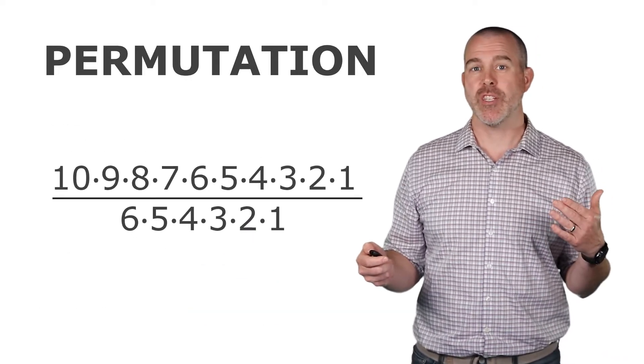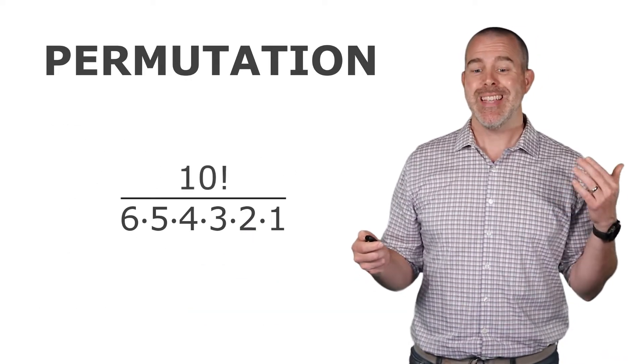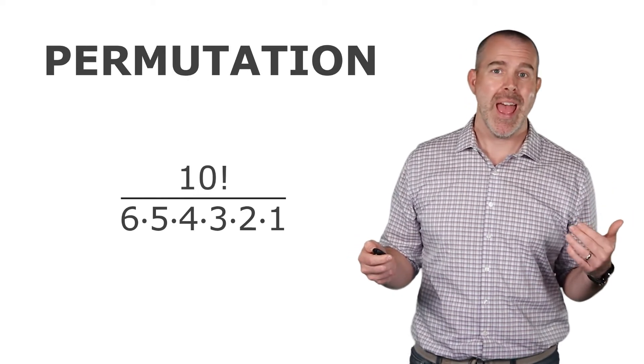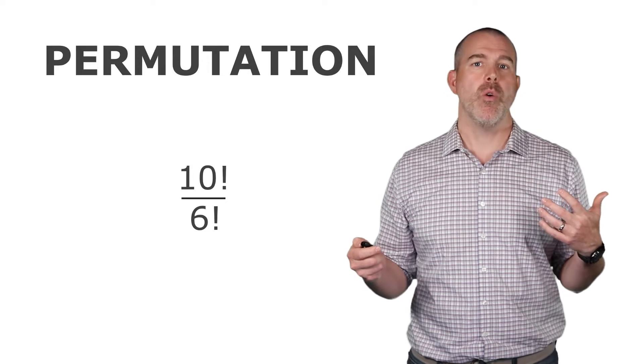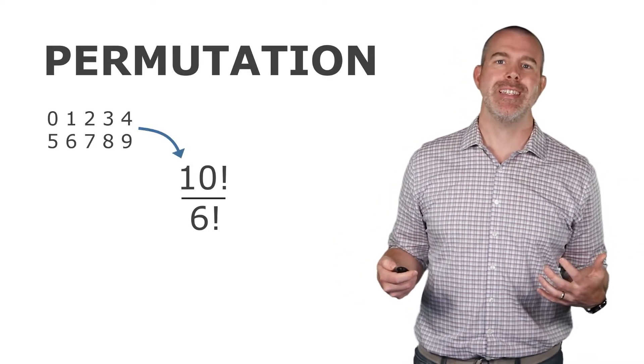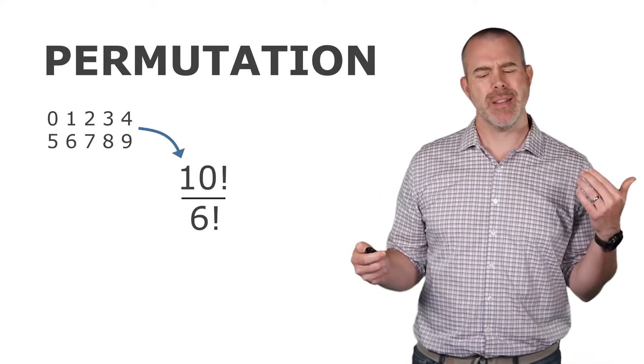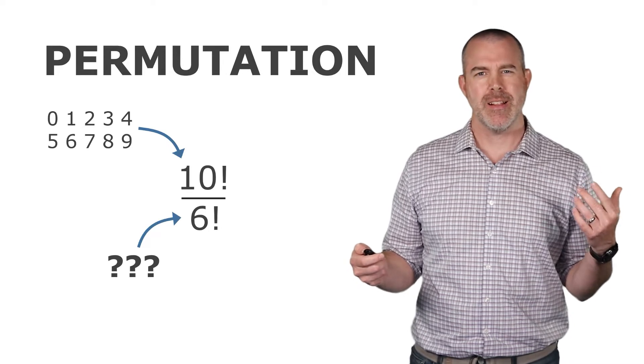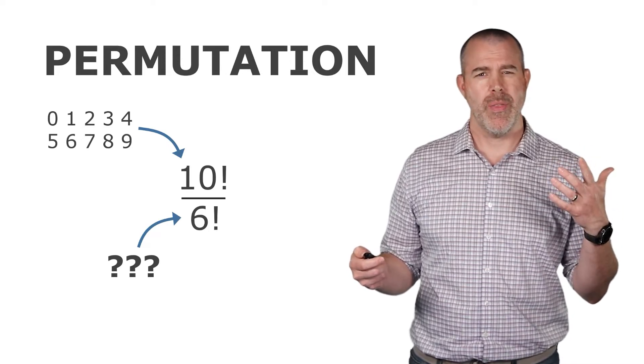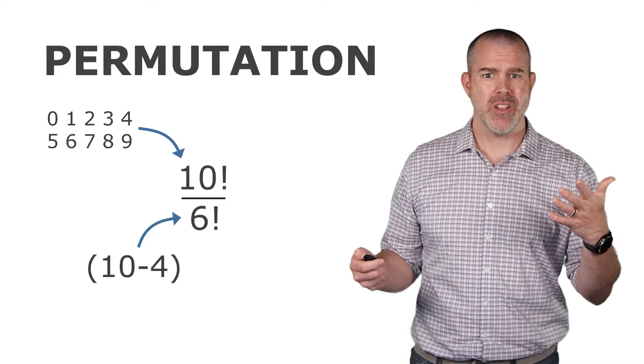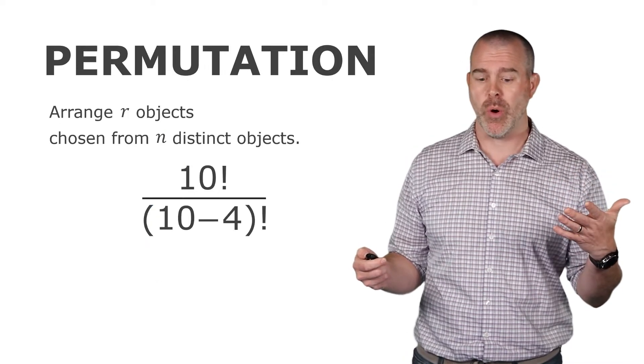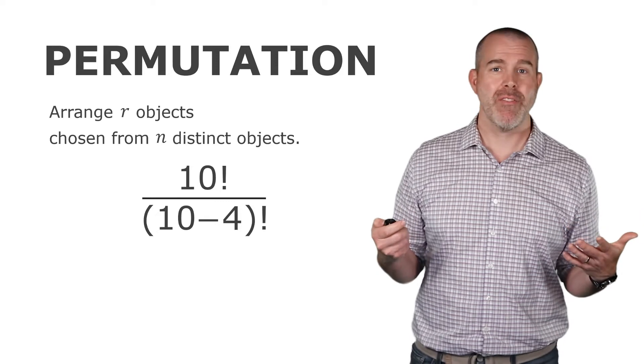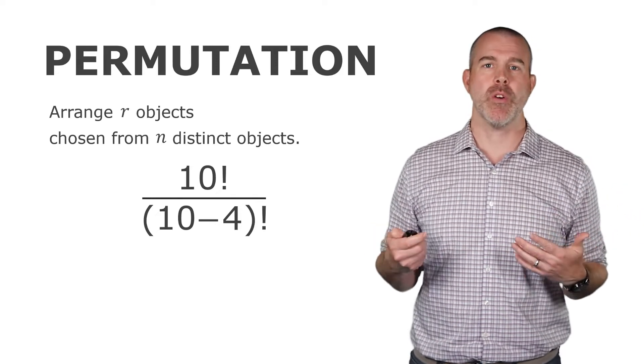Well, if we look at this expression, this is really 10 factorial in the numerator and then 6 factorial in the denominator. Now, we know the 10 comes from the 10 digits. But the question is, what about the 6? Well, that's the leftover, right? So if you look at that 6, it's really 10 minus 4 factorial. And so we have this 10 factorial over 10 minus 4 factorial.